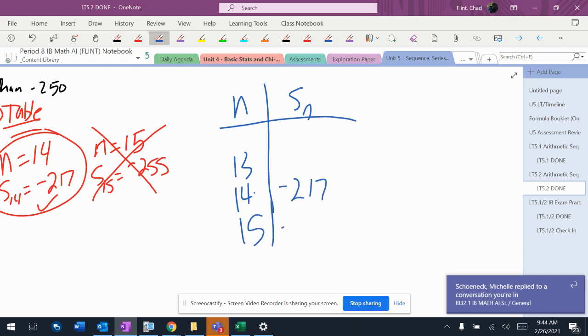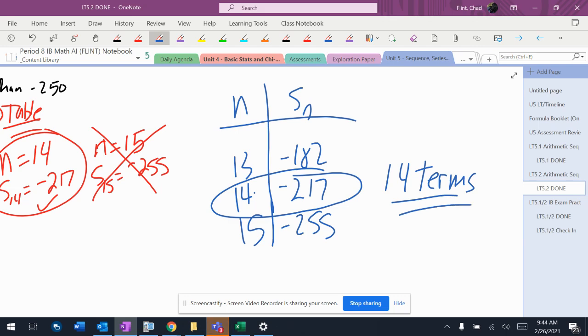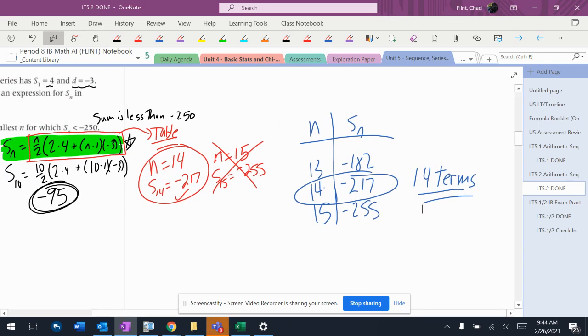This is negative 182, this is negative 217, this is negative 255, and then that other one is negative 182. And that's going to show enough, and then I would say 14 terms. That is the absolute easiest way to do it. It shows that you understand what you're talking about, and it's something that's very easy for you guys to actually do rather than try to have to go through and do a whole bunch of factoring.